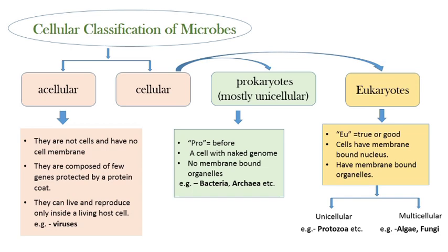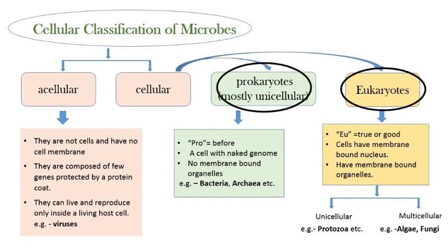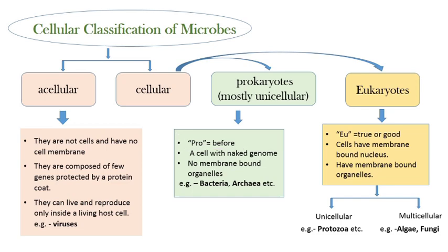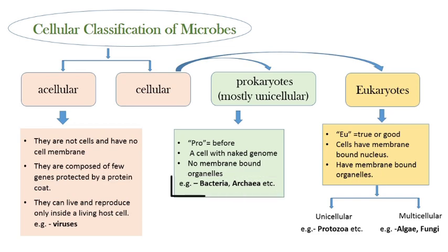If we consider cellular microbes, they are further classified into two groups: one is prokaryotic microorganisms and another is eukaryotic microorganisms. Prokaryotes are mostly unicellular in nature. 'Pro' means before, referring to the fact that they are primitive organisms of our environment. They have a naked genomic structure known as nucleoid. They also don't have any membrane-bound advanced organelles inside their cell. Examples: bacteria, archaea, etc.